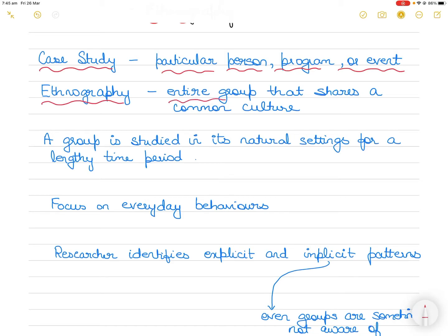In contrast, in ethnography, when we employ ethnography as a research design, a researcher will look in depth at an entire group, more specifically a group that shares a common culture. The word ethnography itself comes from the word ethnos, which is a Greek word for a nation or a close-knit group of people, and graph, something written or recorded.